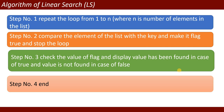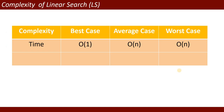Algorithm of linear search: Step 1 — repeat the loop from one to n, where n is the number of elements in the list. Step 2 — compare the elements of the list with the key, set a flag to true, and stop the loop. Step 3 — check the value of the flag: display 'value has been found' if true, and 'value is not found' if the flag is false.